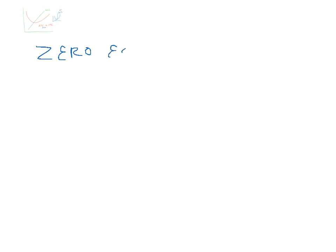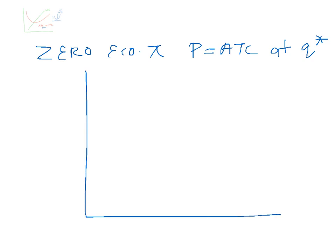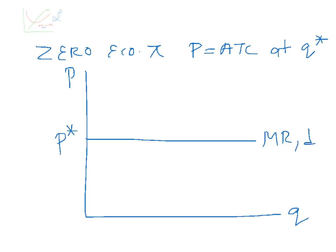Zero economic profit. Price will be equal to average total cost at Q-star. Price is equal to marginal revenue, equal to the demand curve. Draw your marginal cost curve.